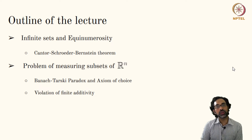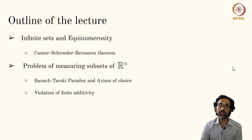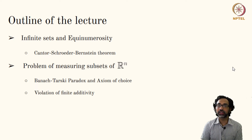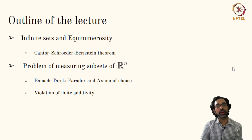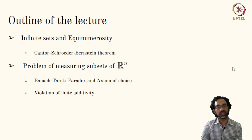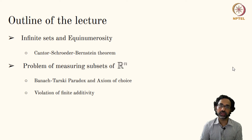The Banach-Tarski paradox uses in a fundamental way the so-called axiom of choice, which is an axiom in set theory. We will see that with this axiom of choice the Banach-Tarski paradox holds, and the violation of finite additivity for subsets of R^n forces us to categorize subsets of R^n into two groups: one called measurable subsets and the other non-measurable subsets.